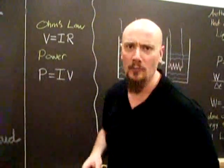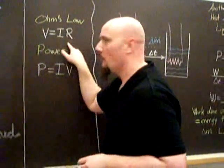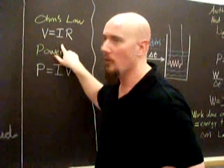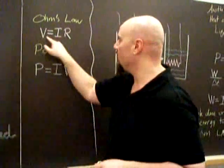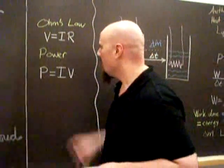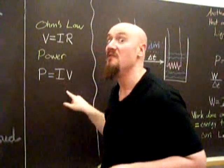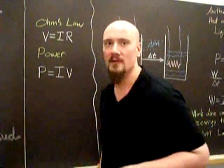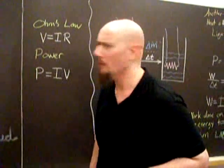Ohm's law, the macroscopic Ohm's law, V equals IR. Voltage equals current times resistance. And then the electric power, P=IV. The power equals current times voltage. You'll need both of those for this.